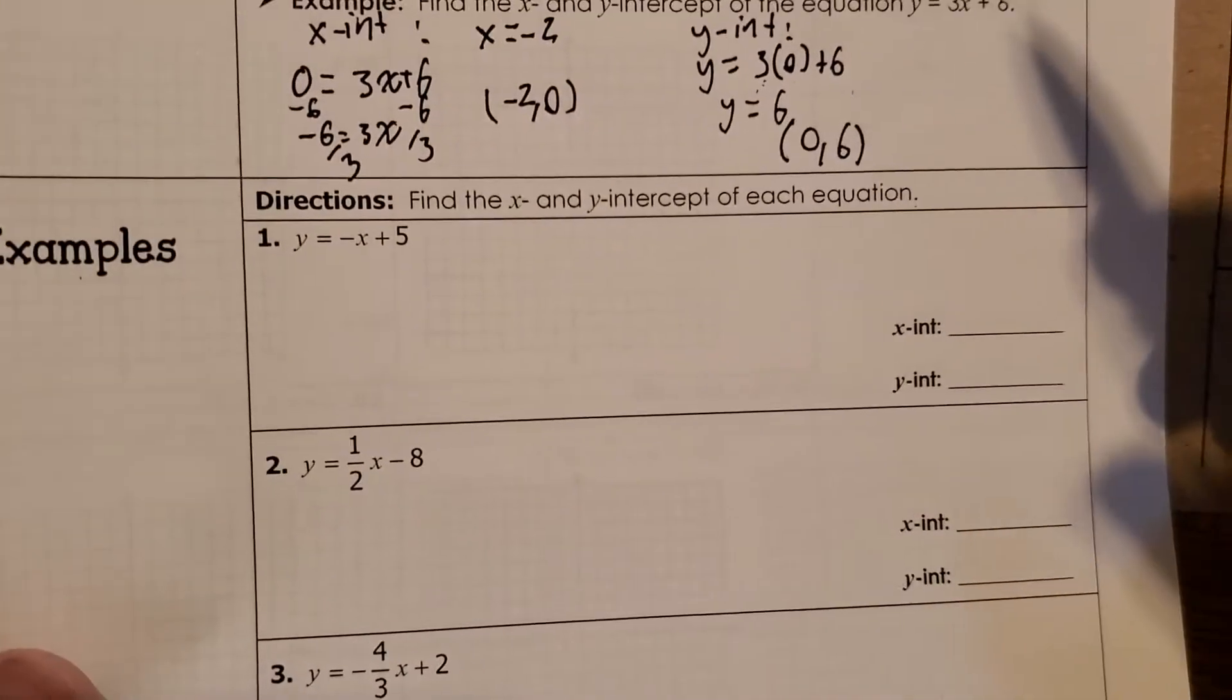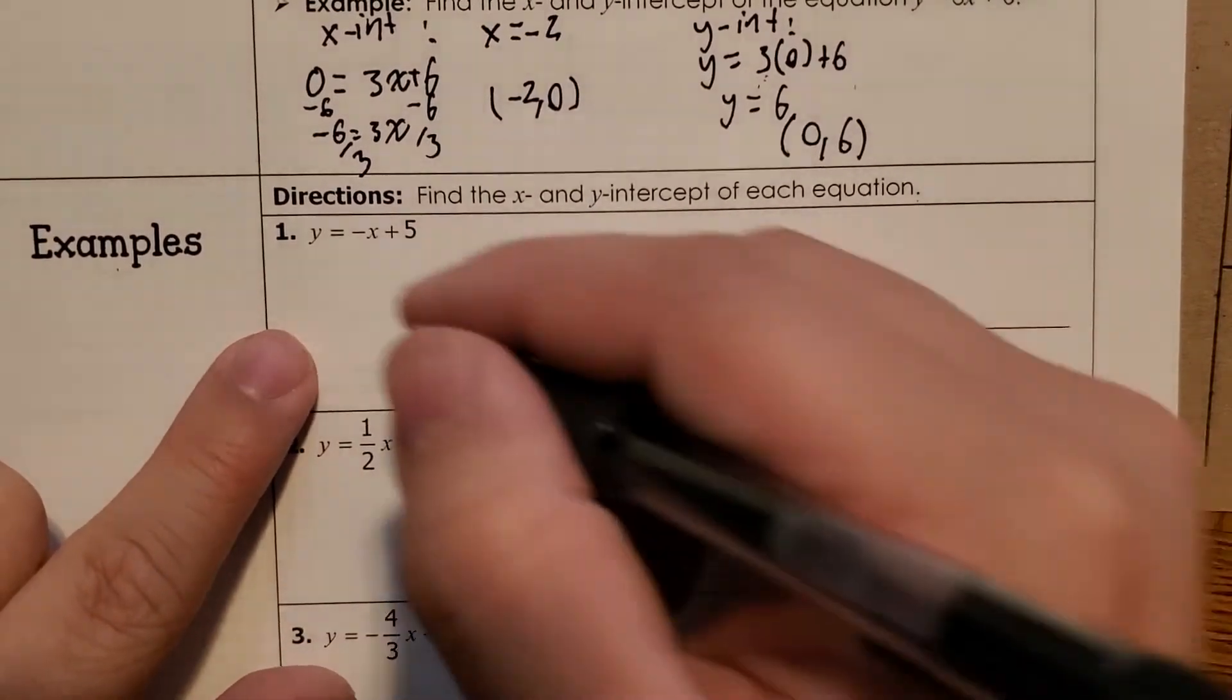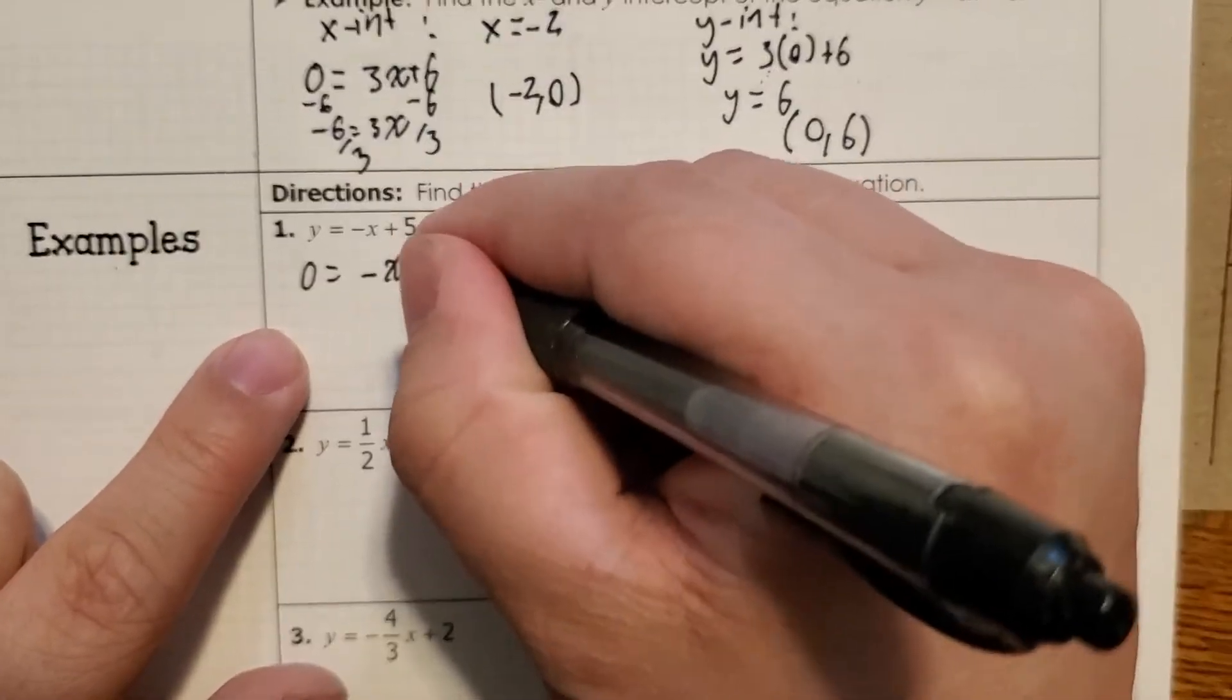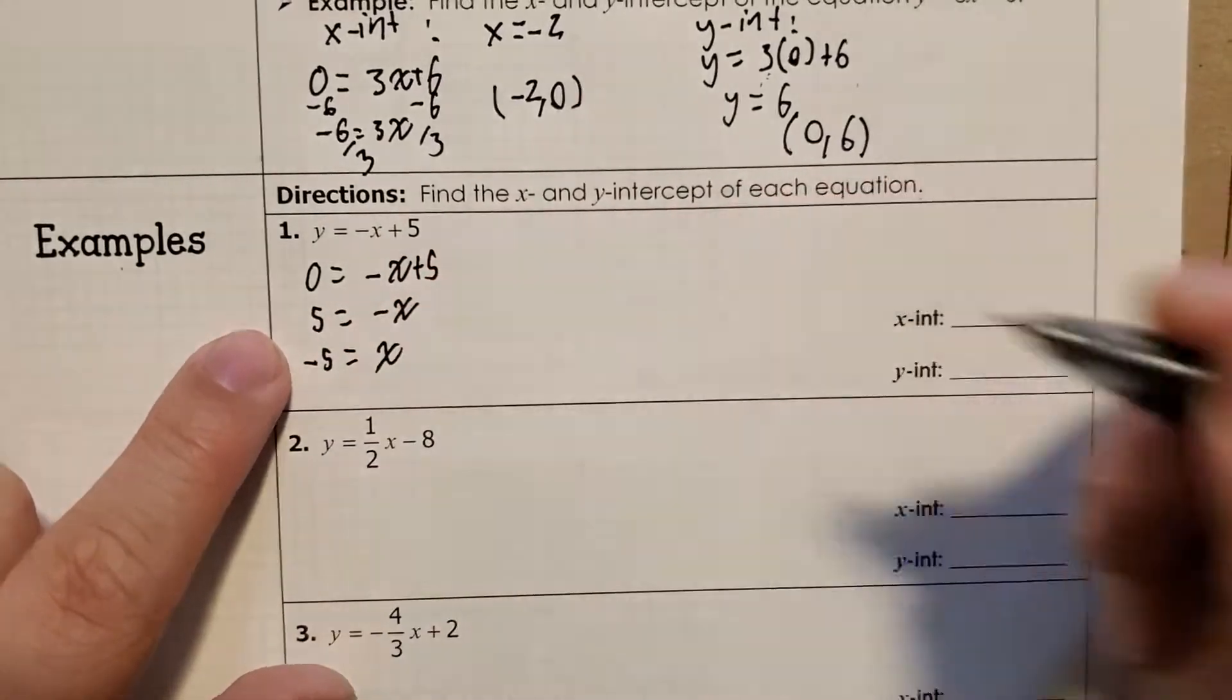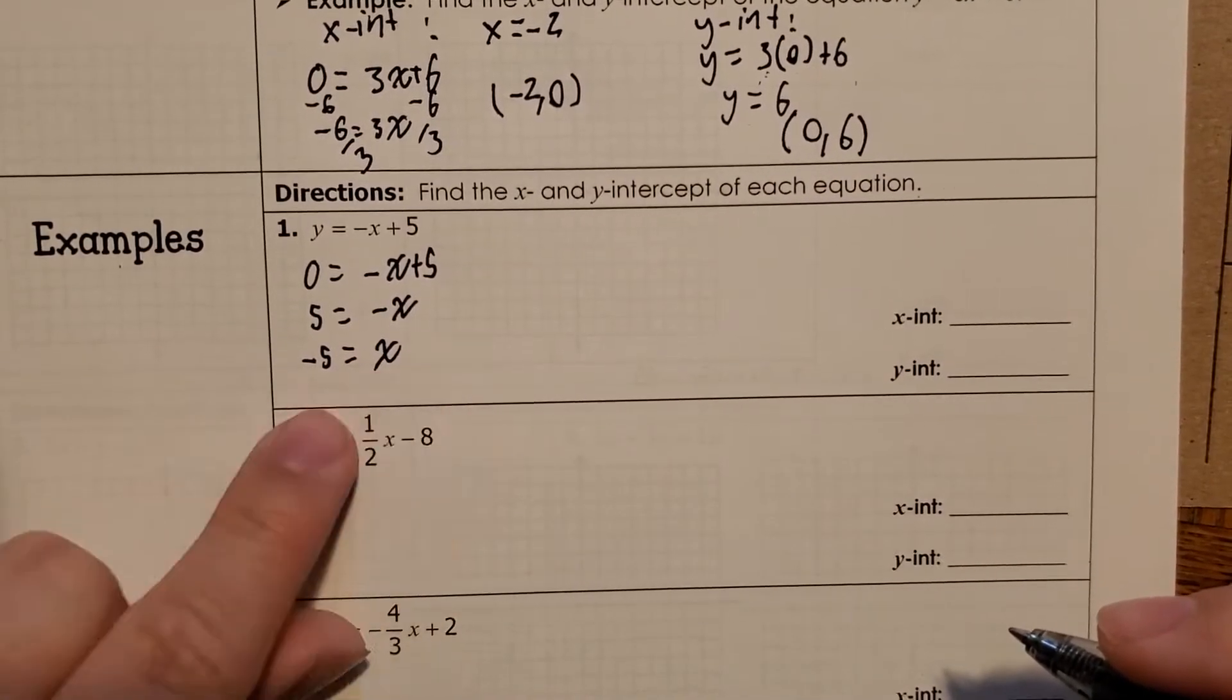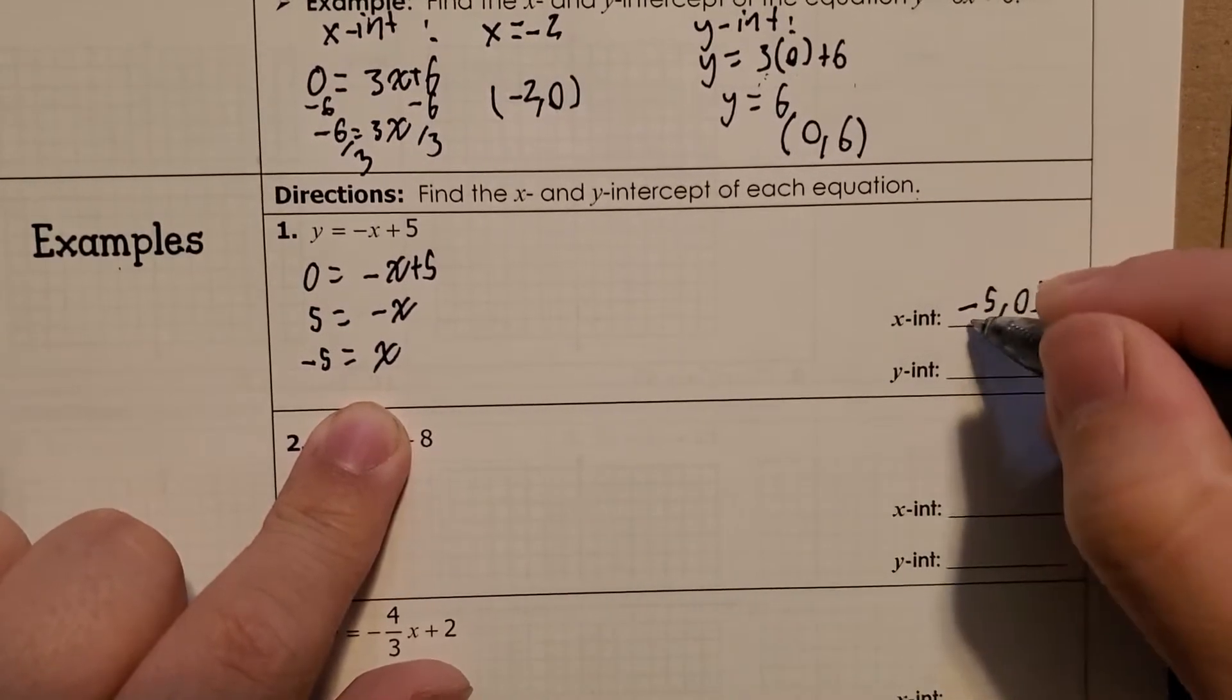So I'm going to do one more example here. Again, these are the solving algebraically ones. So to find our x-intercept, we're going to set that to 0. So 0 equals negative x plus 5. Add 5 to both sides. So then we multiply or divide by negative 1. Move that over, we get that. So our point is at negative 5, 0.